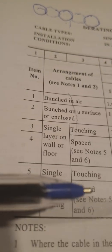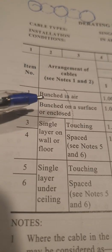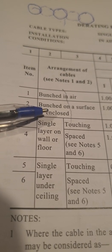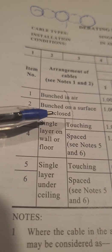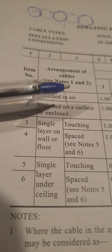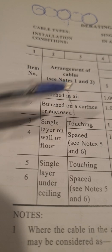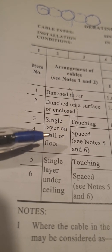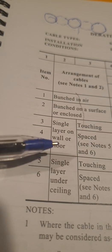Same thing here again - we have touching and we have spaced again for the diameter. Just some simple things to take in there: bunched in air, bunched on the surface, which could be like all the cables joined together, like on a fake ceiling if you have a drop ceiling or something like that, all the cables bunched together on that surface. Bunched in air is more about a catenary.